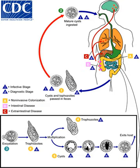Amoebiasis in tissues is treated with either metronidazole, tinidazole, nitazoxanide, dehydroemetine, or chloroquine, while luminal infection is treated with diloxanide furoate or iodoquinol. Effective treatment against all stages of the disease may require a combination of medications. Infections without symptoms do not require treatment, but infected individuals can spread the parasite to others and treatment can be considered. Treatment of other Entamoeba infections apart from E. histolytica is not needed.